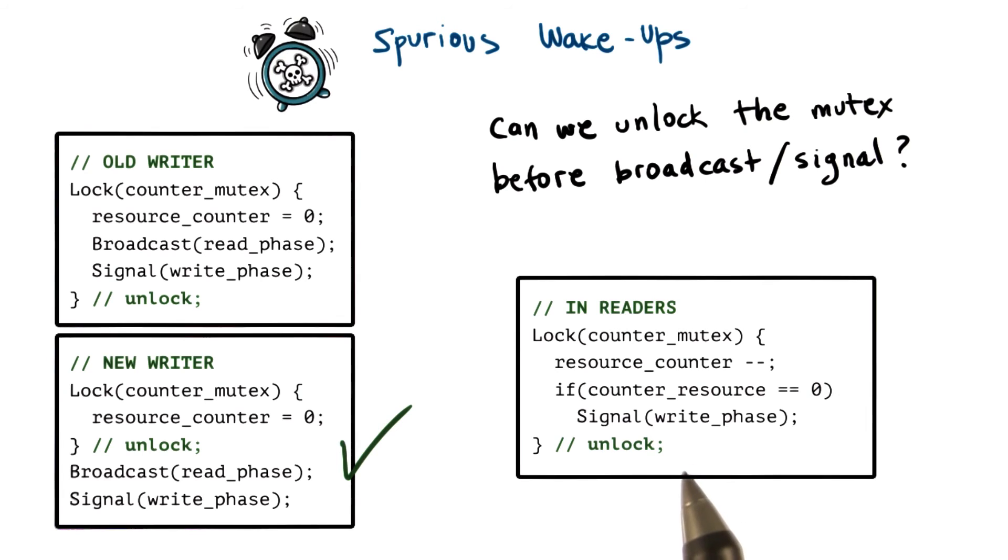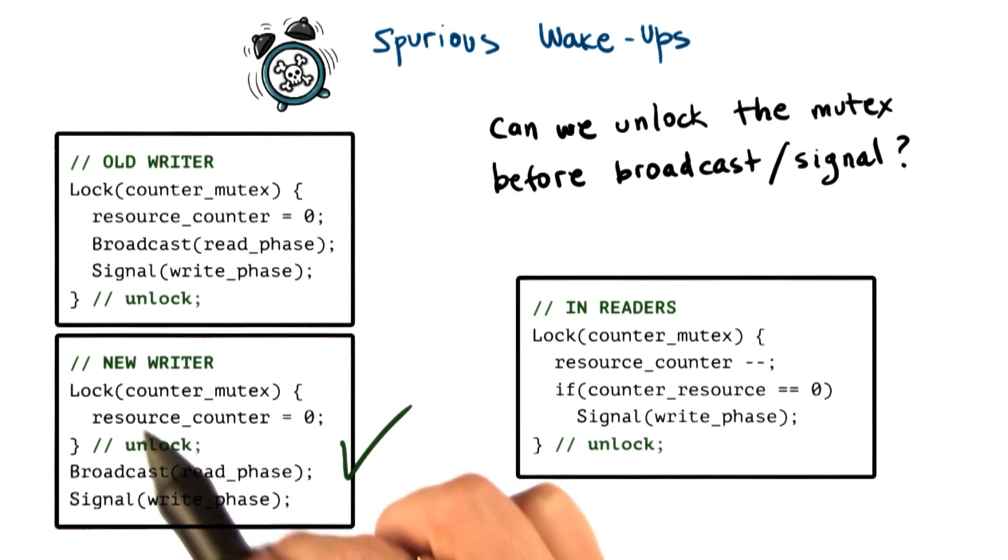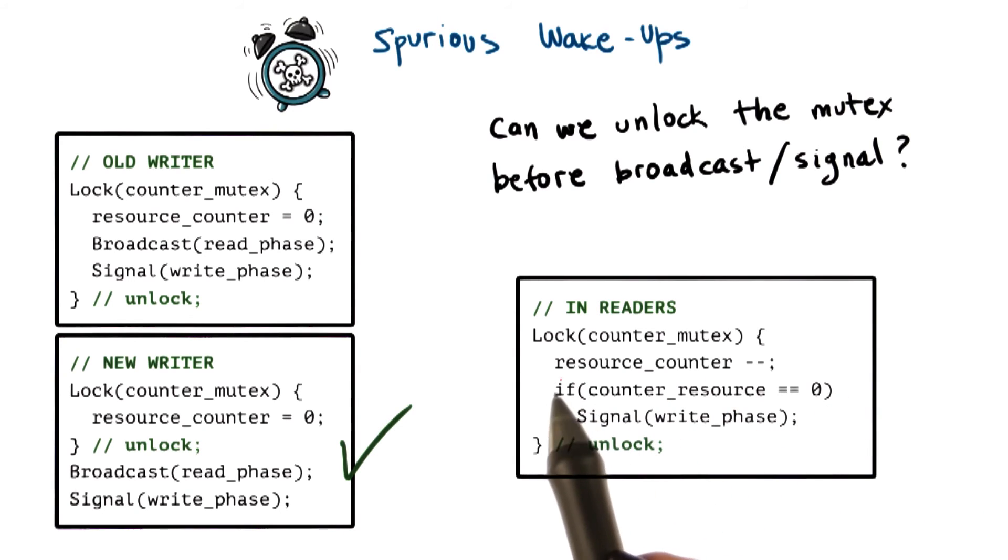this would not be possible. We cannot restructure the program in this way. So if we look at what's happening at the readers, the signal operation is embedded in this if clause and the if statement relies on the value of resource counter. Now,